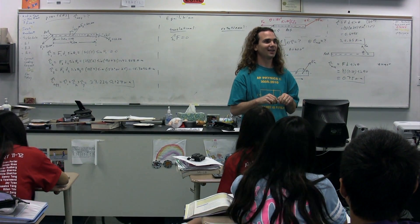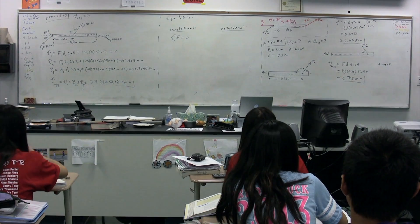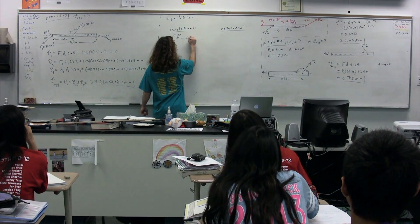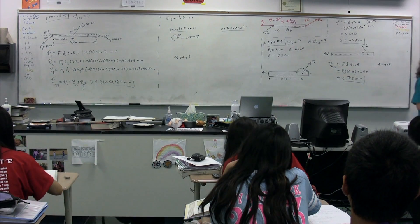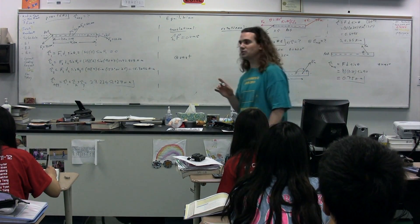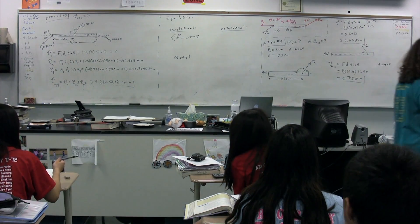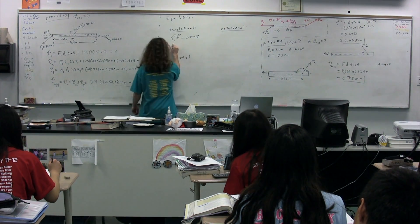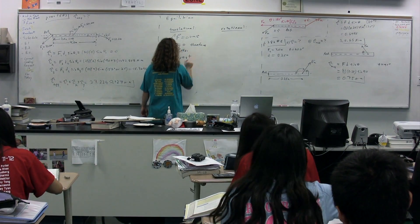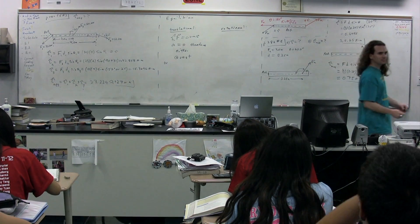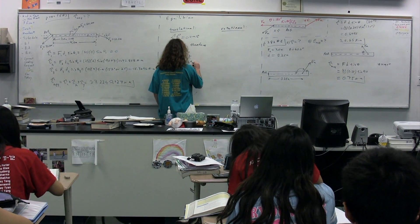Newton's second law states that the net force is equal to mass times acceleration, where both force and acceleration are vectors. If the object is in equilibrium, the net force equals zero, which means the acceleration is also equal to zero. Therefore, the object is either at rest or moving at a constant velocity.